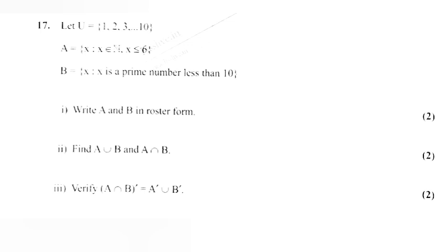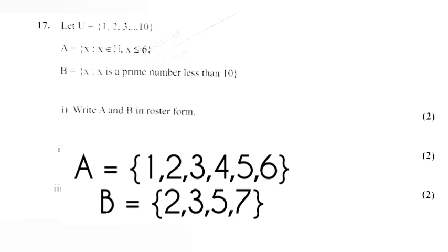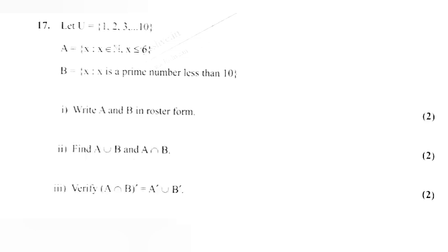Question 1: Write A and B in roster form. Answer: A equal {1, 2, 3, 4, 5, 6}; B equal {2, 3, 5, 7}.